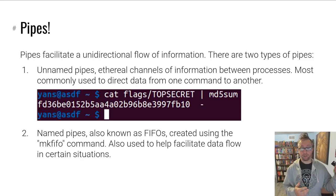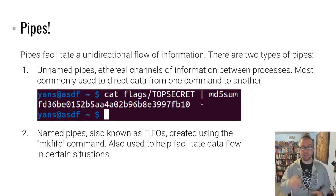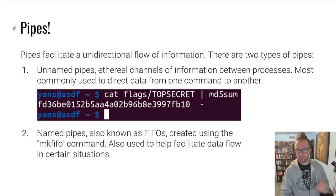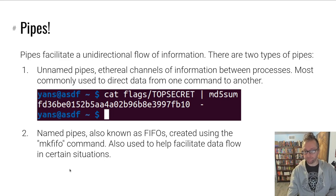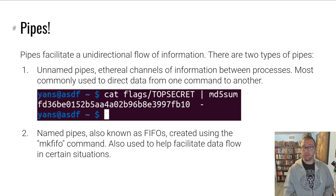Named pipes, also known as FIFOs — for first-in, first-out, meaning the first data received is the first data output — are a file that exists on the file system and acts the same as a pipe: a unidirectional information channel for information flow. You'll have to get familiar with those as well and with the mkfifo command — read the man page.